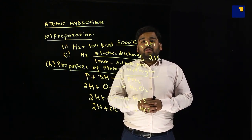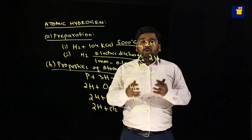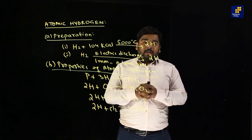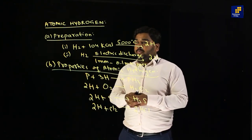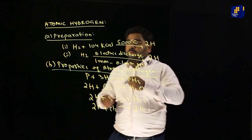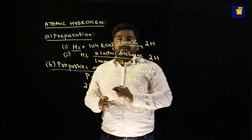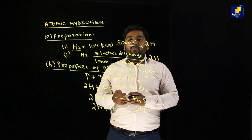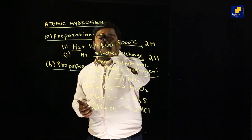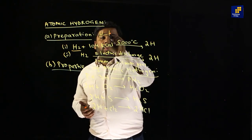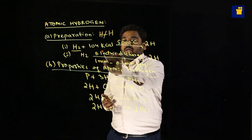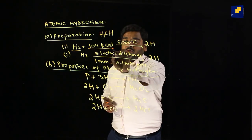We have to use molecular form which we can see on the board. We need to use 104 kcal energy — because in hydrogen form, to break this bond, we need this amount of energy.